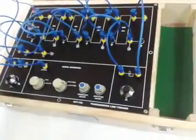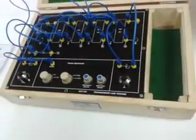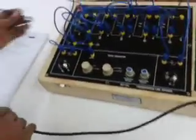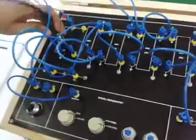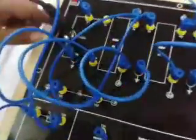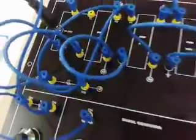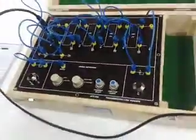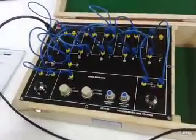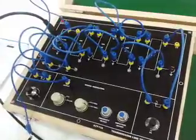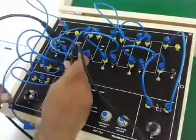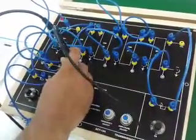Connect first channel of CRO to the BNC connector provided on board to calculate VIN across the 1 ohm resistor. Connect the second channel of the CRO at the output across the 1 ohm resistor presented on board.